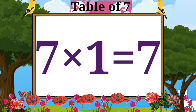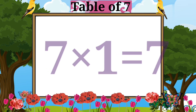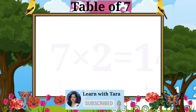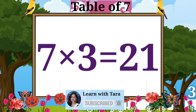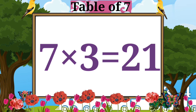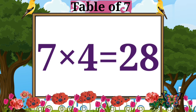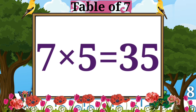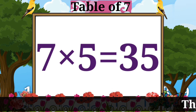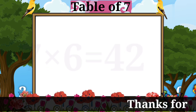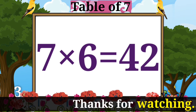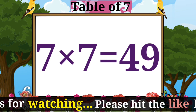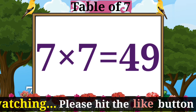Table of seven. Seven ones are seven. Seven twos are fourteen. Seven threes are twenty-one. Seven fours are twenty-eight. Seven fives are thirty-five. Seven sixes are forty-two. Seven sevens are forty-nine. Seven eights are fifty-six. Seven nines are sixty-three. Seven tens are seventy.